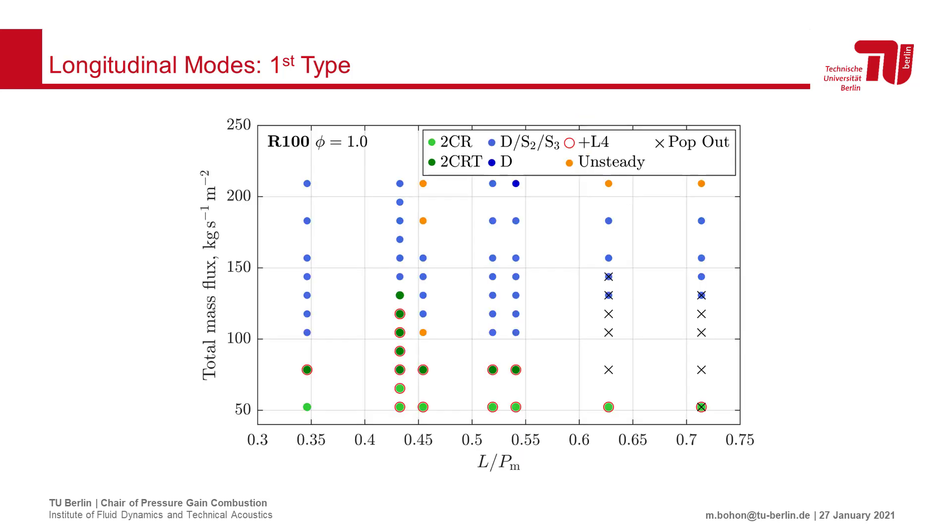We therefore need to ask, under what conditions do we see this new mode? To answer this, we varied the combustor geometry, shown here as the combustor length over the perimeter, and studied a range of mass flow rates and outlet boundaries.